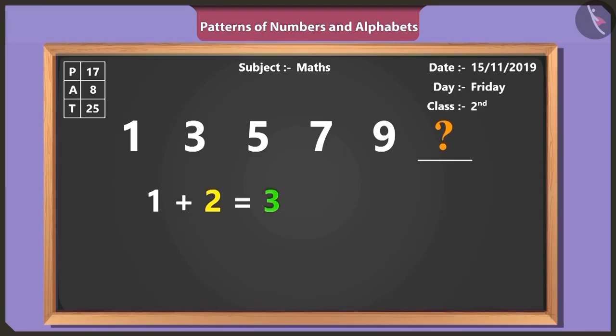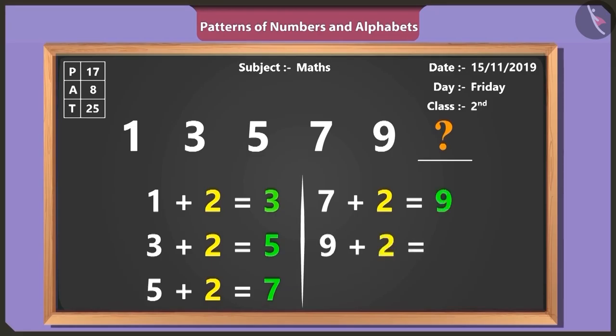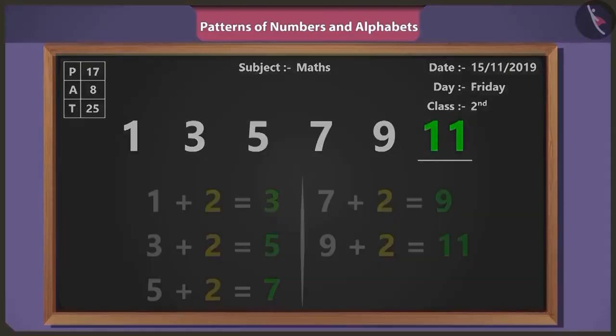Yes, two added to three gives five. Two added to five gives seven. Two added to seven gives nine. And two added to nine, result is eleven. Yes, therefore eleven comes after nine in this pattern.